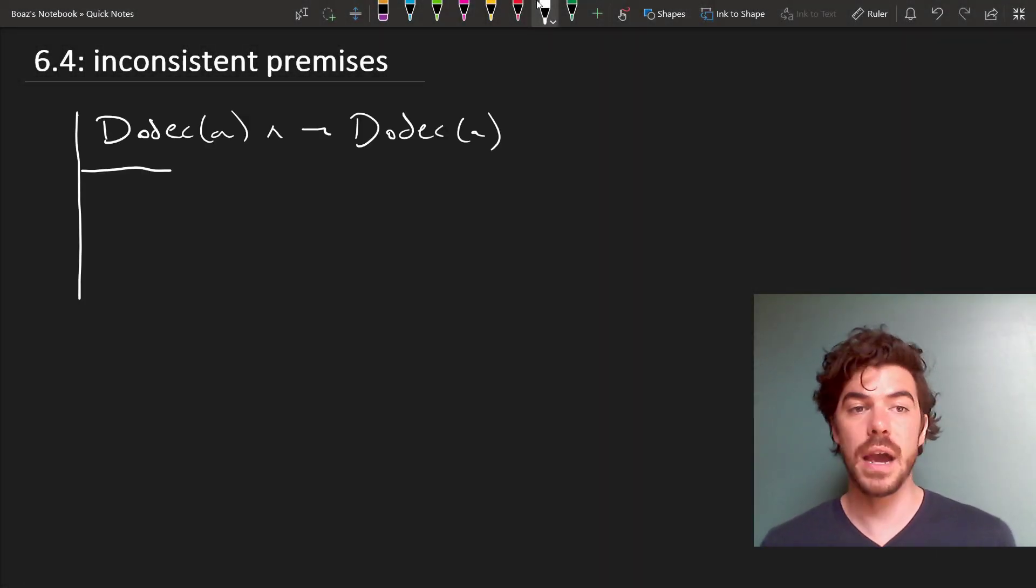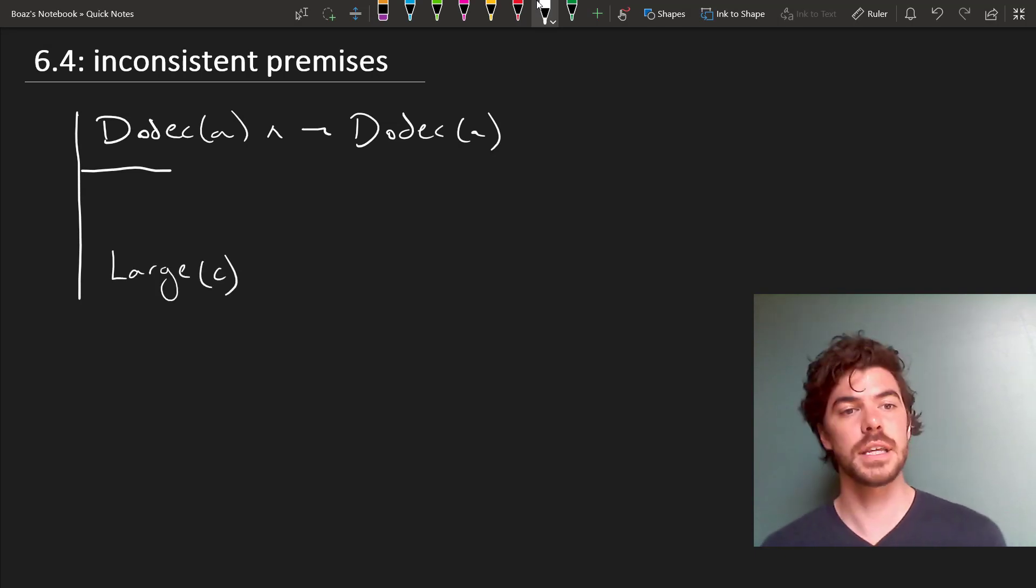The following argument is actually valid. A is a dodecahedron and A is not a dodecahedron, therefore C is large.